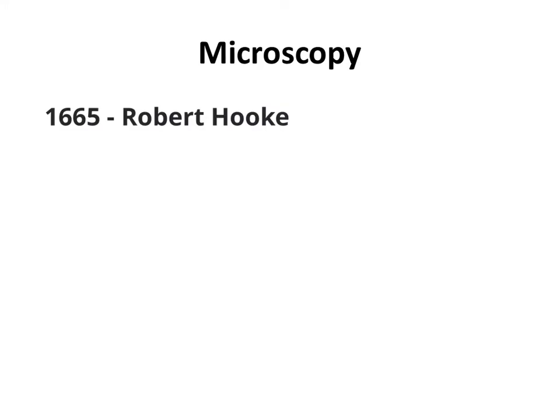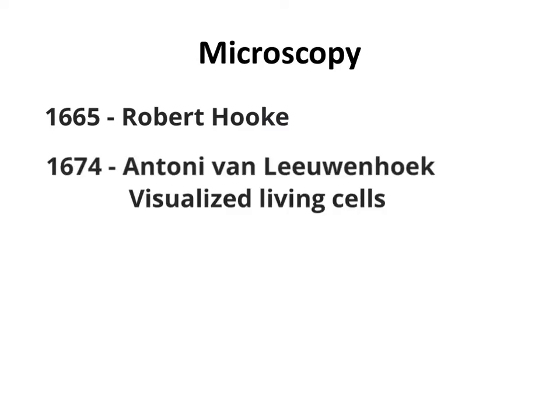Microscopes are needed in order to see cells and inside the cells. There are different microscopes that allow for different visualization of the cells, and we're going to be talking about several different kinds as we go through the next slides. Microscopes were invented in 1590 and continued to be further refined during the 1600s. In 1665, Robert Hooke was able to see cell walls through a microscope of dead cells from the bark of an oak tree.